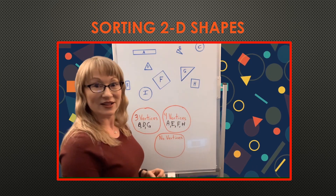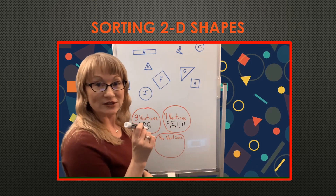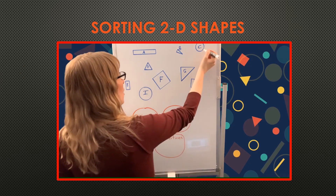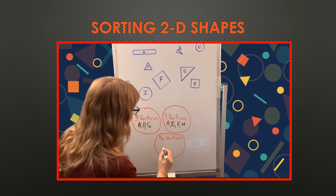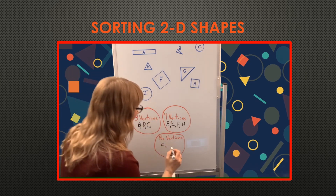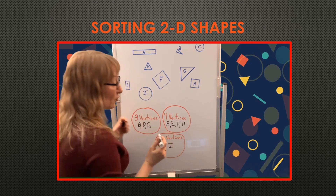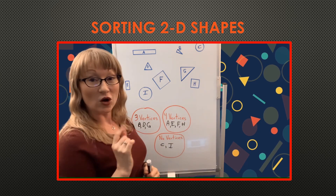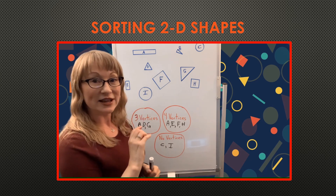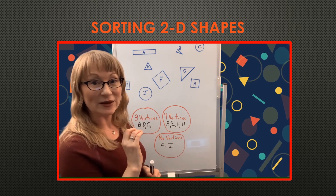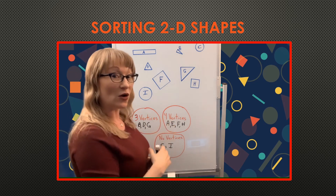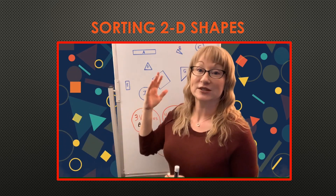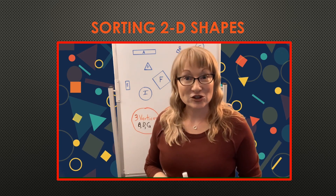No vertices — well, remember the work we did about different shapes. Which one has no vertices? It would be the circle. So C has no vertices, and I has no vertices. When you're done and think you have all the right answers, I want you to double count. Make sure you've got them all and put in any that are possibly missing. This is how you work with different attributes and shapes. Take your time and check your answers.